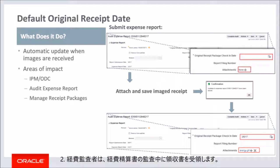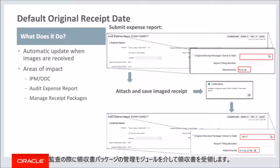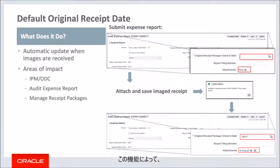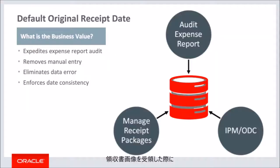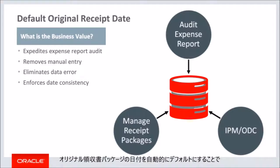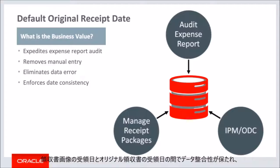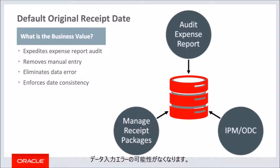The default receipt date rule applies when: receipts are emailed or faxed by the user via Oracle Web Center Capture and Oracle Web Center Imaging Services, also known as IPM and ODC; the Expense Auditor receives receipts while auditing an expense report; and the Payables Clerk receives receipts via the Manage Receipts Packages module in Audit. Ultimately, this feature saves the expense auditor the added effort of manually entering duplicated information, removing the possibility of data entry errors while enforcing data consistency between the image receipt received date and the original receipt received date.